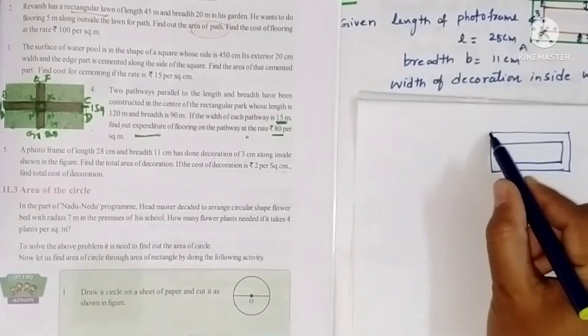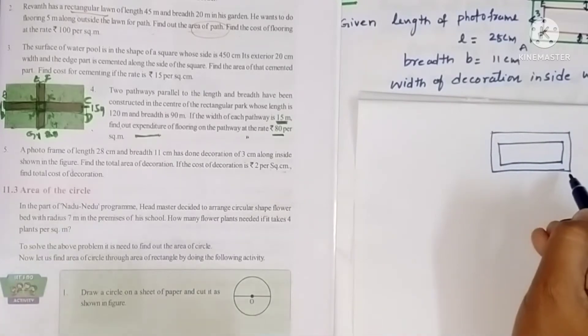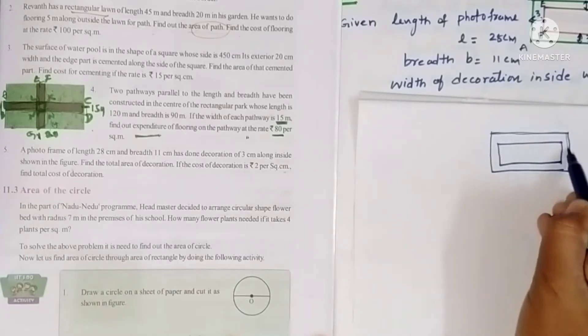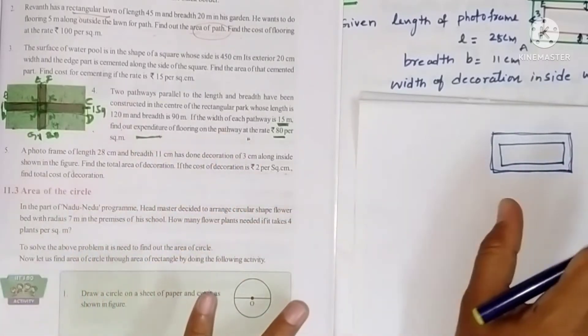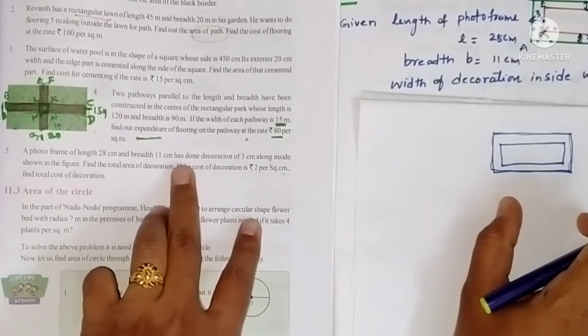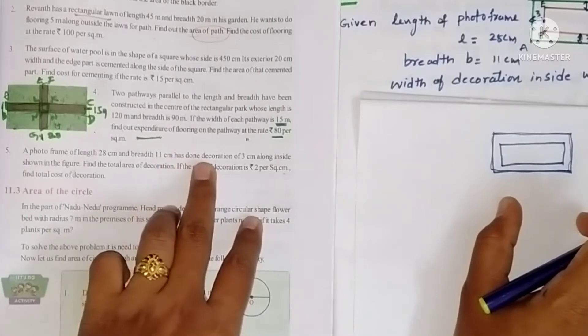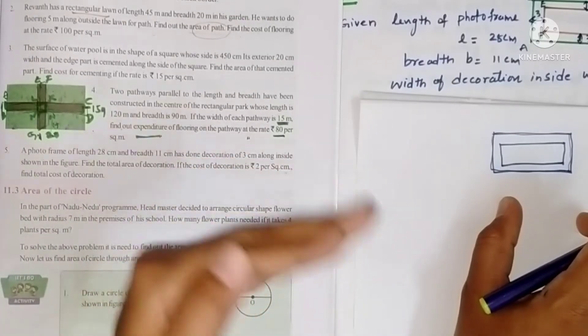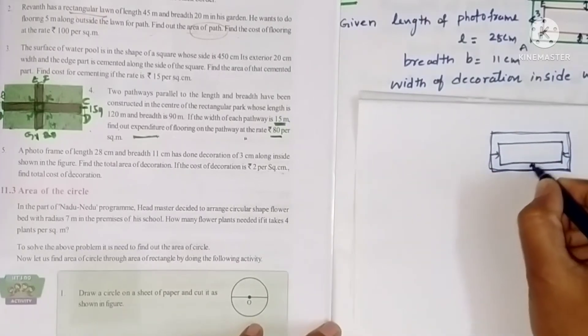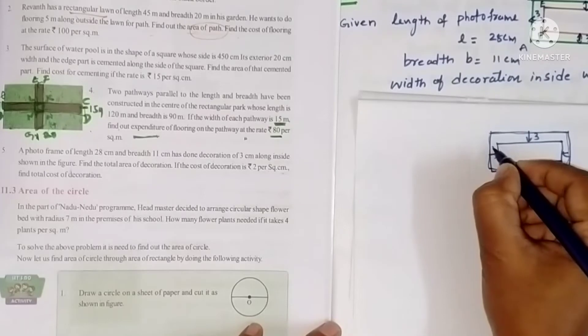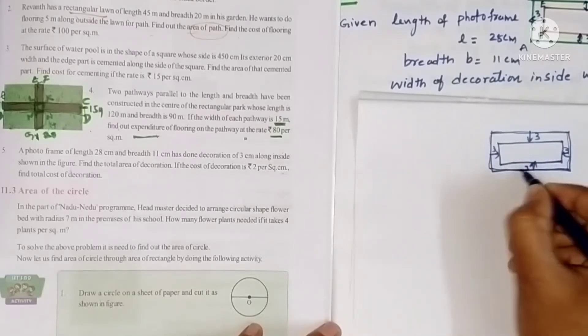Okay, so students, I'm using English to explain. If you listen you can understand, okay. So first you just draw a rectangle. Now a decoration has done 3 centimeter along inside, so that means this width is 3 centimeters.